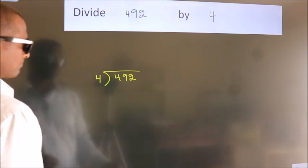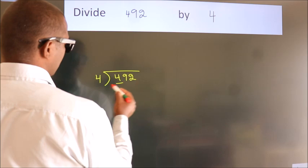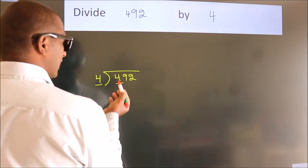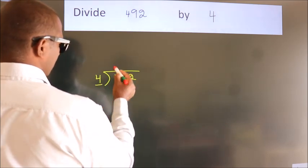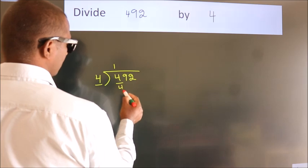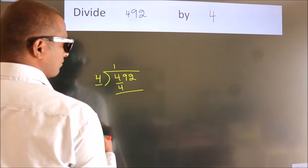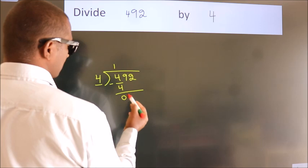Next, here we have 4, here 4. When do we get 4? In the 4 times table, 4 once is 4. Now, we should subtract, we get 0.